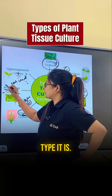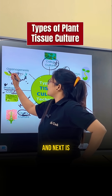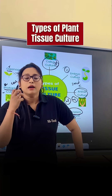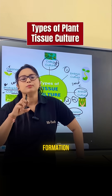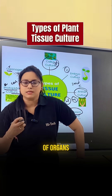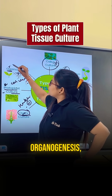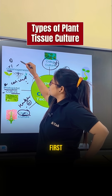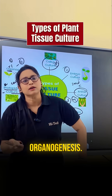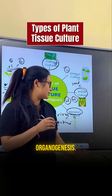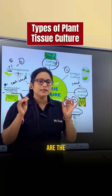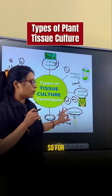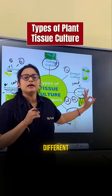Next is organogenesis. Organogenesis means the complete formation of organs from the callus. Organogenesis has two types: direct organogenesis and indirect organogenesis. These are the different types of plant tissue culture.